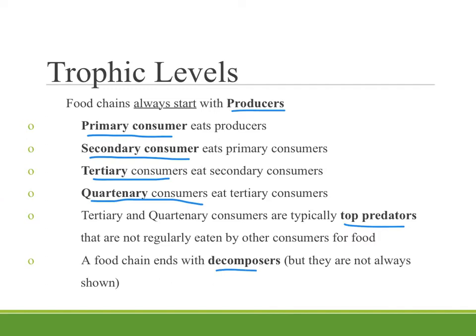Food chains of course are always going to include decomposers, but they're usually not shown. Decomposers can come in on any level because if something dies that's a primary consumer, it will be decomposed, and so those decomposers will be on that secondary level. If it's a quaternary consumer that dies, your decomposers come in again. So decomposers are usually left out.